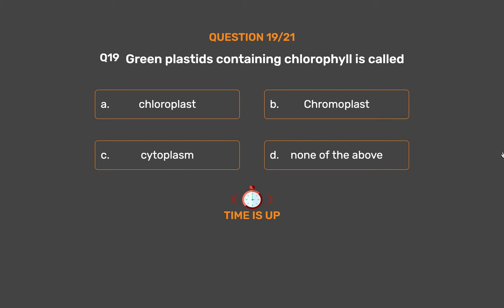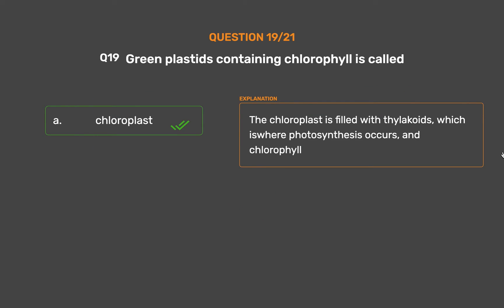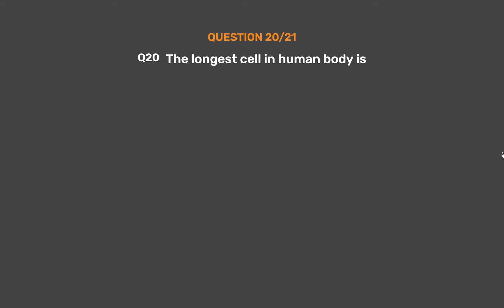The correct answer is Option A: Chloroplast. The chloroplast is filled with thylakoids, which is where photosynthesis occurs, and chlorophyll.